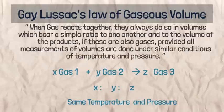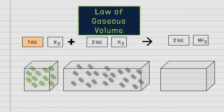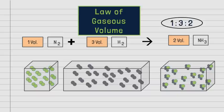For example, 1 volume of nitrogen reacts with 3 volumes of hydrogen to give 2 volumes of ammonia. These volumes bear a simple whole number ratio of 1:3:2. Hence, this reaction follows the law of gaseous volumes.